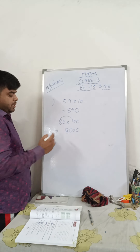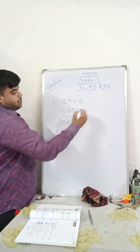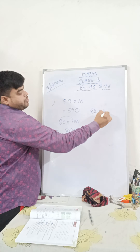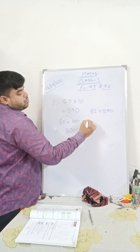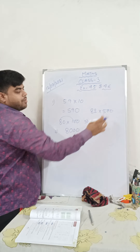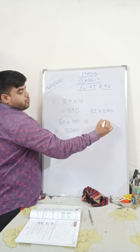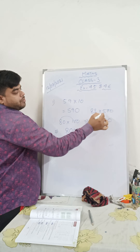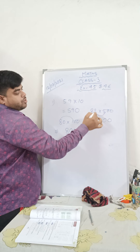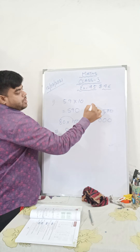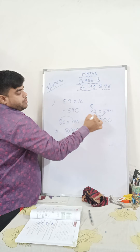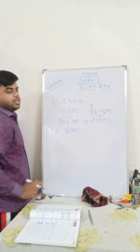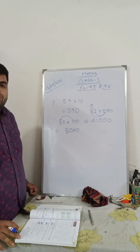Take another example: 82 multiplied by 500. See how many zeros you have — 1, 2. Put the zeros at the last. Now you multiply: 5 twos are 10, 1 in hand. Then 5 eights are 40 plus 1 is 41. This is how you have to do it.